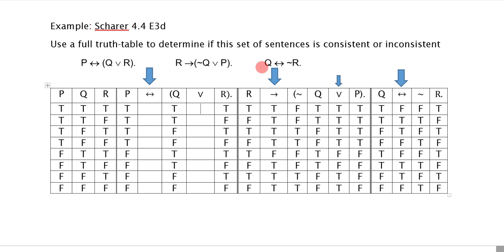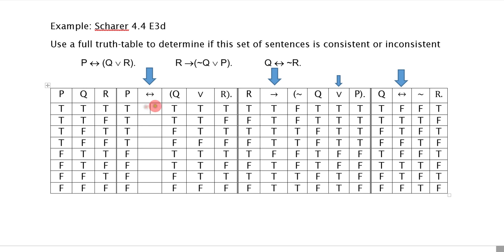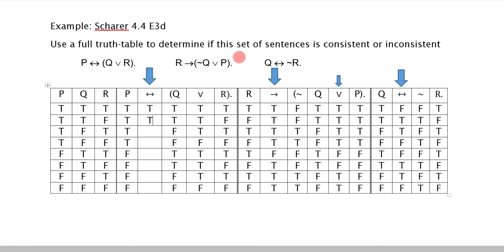Finally, I have to do Q or R for the first sentence — that's pretty straightforward. Now I can do the biconditional, which is true when both sides are the same. I'm looking at the OR column as well as the P column, and I get true, true, true, false, false, false, false, true.